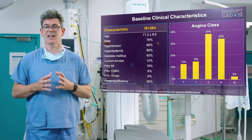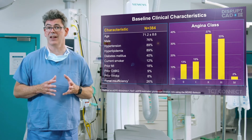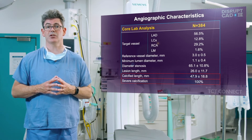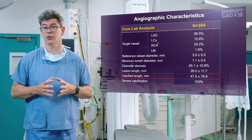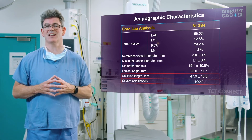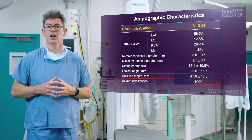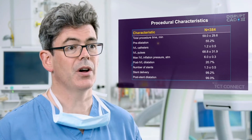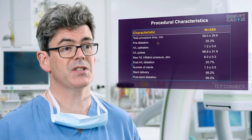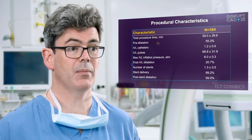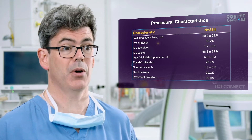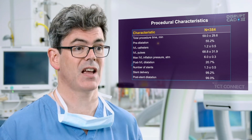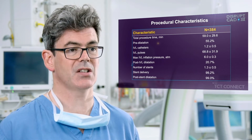Seventy percent of patients had class II or III angina. Baseline angiographic characteristics included a reference vessel diameter average of 3 mm, lesion length average of 26 mm, and calcified segment length of 48 mm. One hundred percent of target lesions were classified as severe calcification. Fifty percent of targets were pre-dilated with a 2 mm or less balloon, and an average of 69 IVL pulses were administered per case with a maximum IVL balloon inflation pressure of 6 atmospheres. Over 99% of stents were successfully delivered.